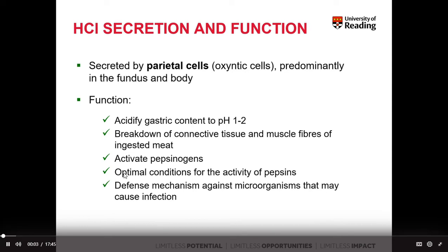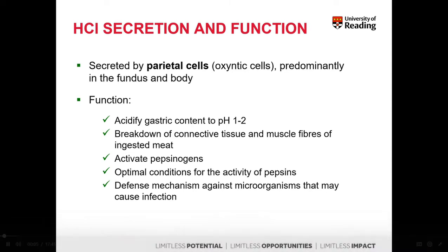Let's start from the hydrochloric acid secretion and function. Hydrochloric acid is secreted by parietal cells — certain older textbooks also call them oxyntic cells. They're predominantly found in the fundus and in the body of the stomach. The main role of the parietal cells is to secrete hydrochloric acid and bring down the pH of the stomach to a very acidic level, around one and two.